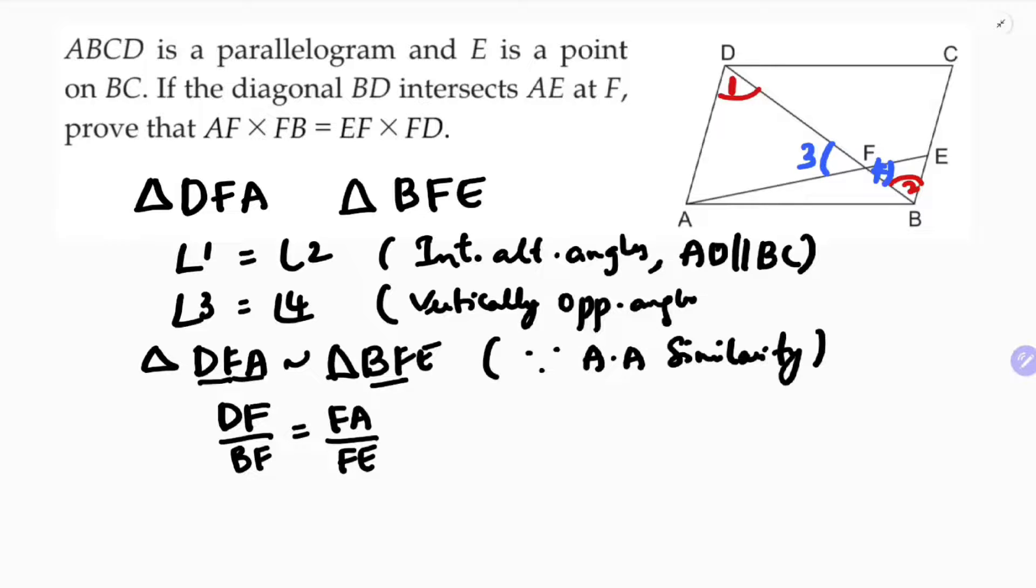See this is what we need to prove: DF, AF into BF. You can add one more side but here it is not required like DA into BE, but to prove this is not required so you can skip this one.